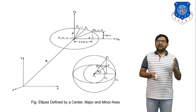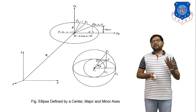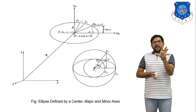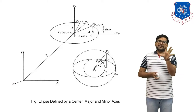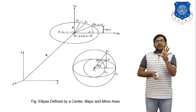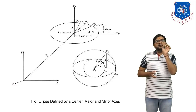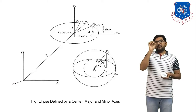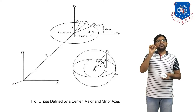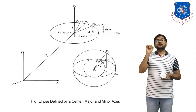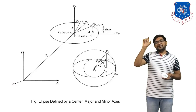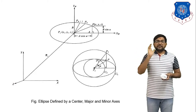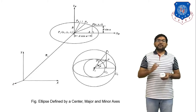Now we have to understand this diagram and derive an equation from it. We have an ellipse, and we consider the center part of the ellipse as (xc, yc, zc). If we have a center point, the equation of the ellipse becomes: (x − xc)² / a² + (y − yc)² / b² + (z − zc)² / c² = 1. We will use this equation here.